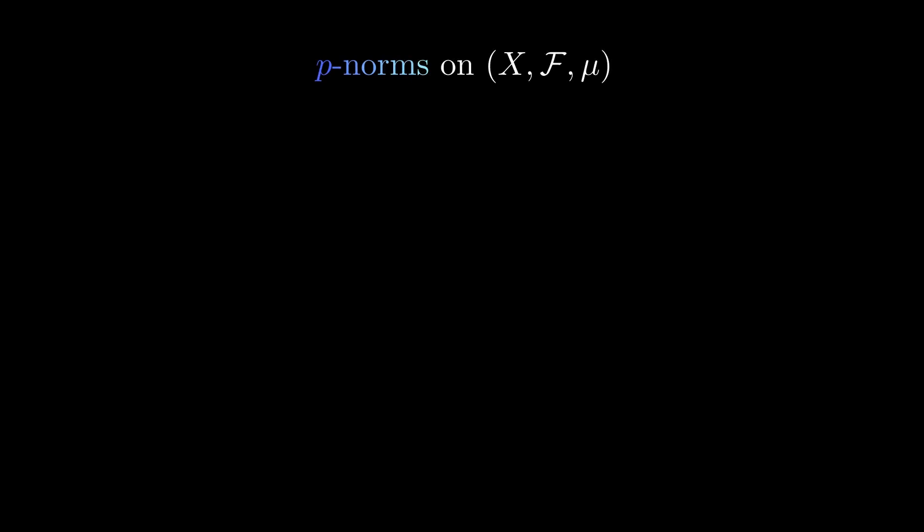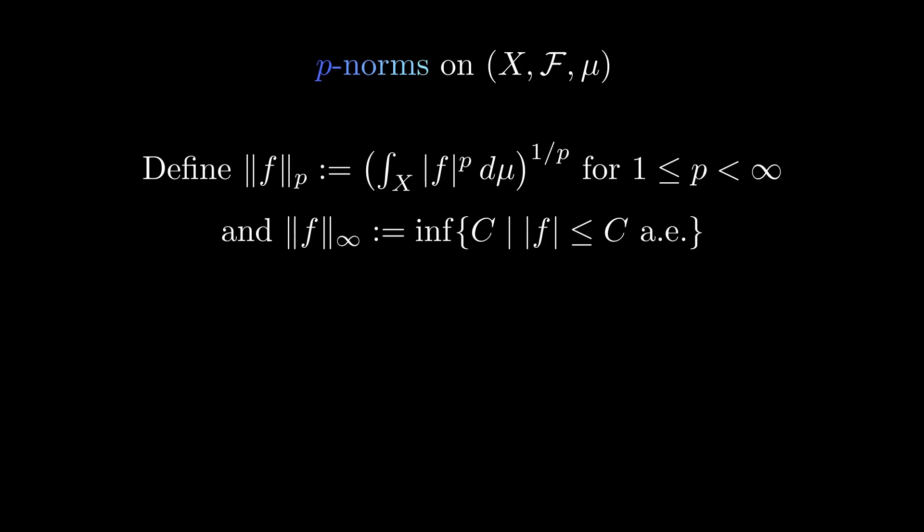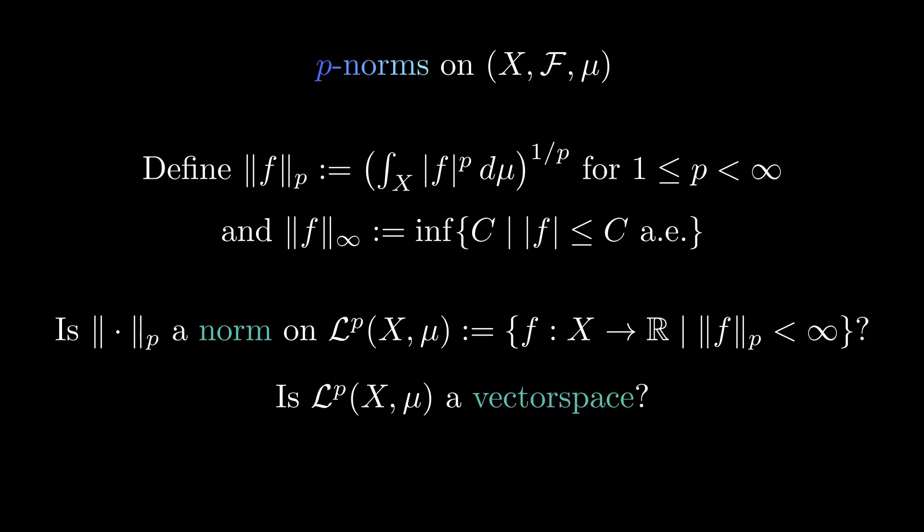The definition of a p-norm for p greater or equal to 1 but not equal to infinity is exactly as we might expect. For p equal to infinity, the situation is more subtle. Ideally, we want to define the norm for all measurable functions. As these functions can be very discontinuous, the behavior on some null set should not influence the norm. That's why we define the supremum norm to be the infimum of all constants which bound the function almost everywhere. As a norm must always be finite, it makes sense to define these p-norms on the space of measurable functions such that the p-norm is finite. But are these functions we call p-norms really norms on those spaces? And are the spaces we define even vector spaces? Let's try to verify this.